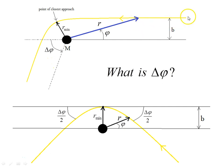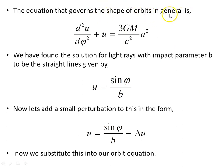Here is a reminder of the diagram: the impact parameter, the incoming photon path described by r and angle φ, the radial coordinate r_min (the point of closest approach), and the deflection angle Δφ. Flipping the diagram to show Δφ/2 centrally, the impact parameter equals r_min. We want to find Δφ. The equation governing the shape of orbits is as shown, and we have found the solution for light rays with impact parameter b to be a straight line.